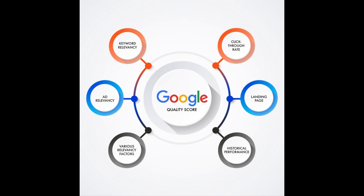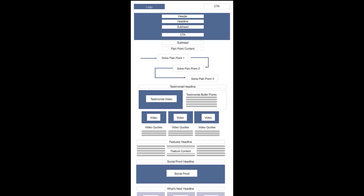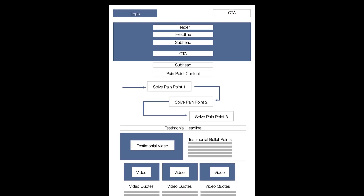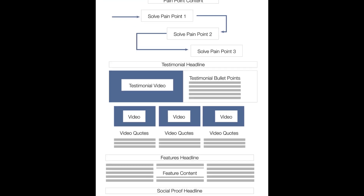Advertising platforms use a similar SEO algorithm to determine your quality score — an arbitrary score given to each page based on how it relates to the keyword. This helps advertising platforms keep irrelevant information off of certain searches. It also allows them to artificially inflate the price of a click. The code structure for this type of page is similar to the SEO structure, with a few major differences.